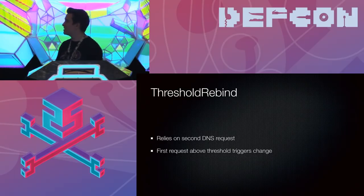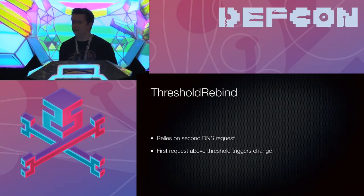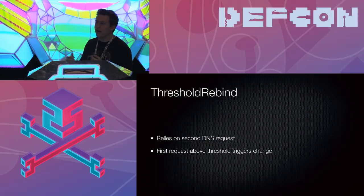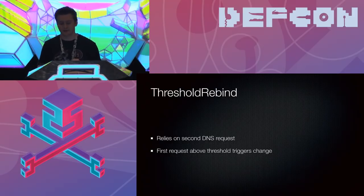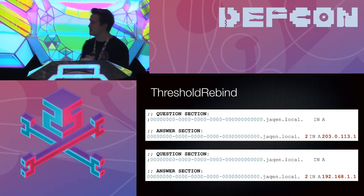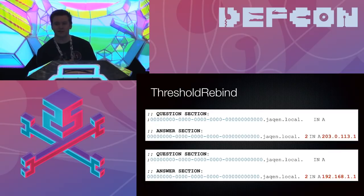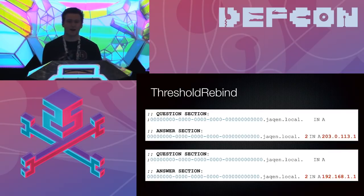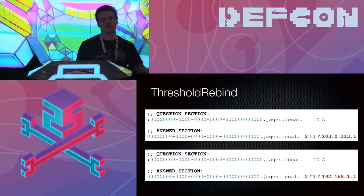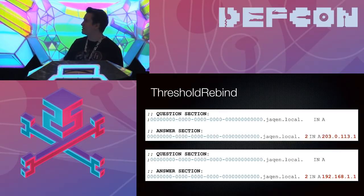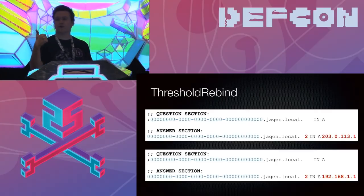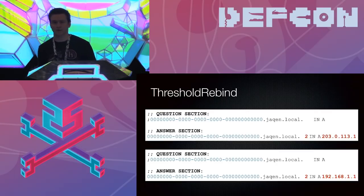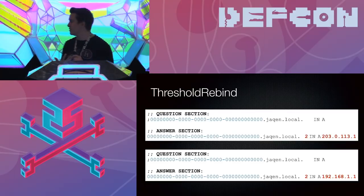Threshold rebind relies on the second DNS request — after receiving a threshold number of questions, you change your answer. The reason: some caches send the same question three or four times even though only one question internally triggered it, so TTL rebinds get messy there. Basically: I got one request, I got two requests, I got three requests — okay, change my answer. You set this up with a couple of different back-offs in terms of timing.